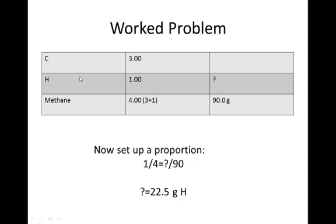I like to work mine in a table, so I put in the carbon, the hydrogen, and the methane. Then it told me there was 3 parts of carbon for every 1 part hydrogen, and then if I add the 3 and the 1 together, I can get the 4 parts for the methane.